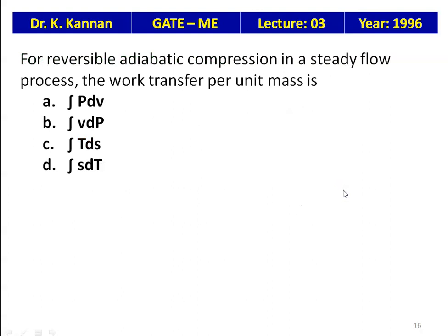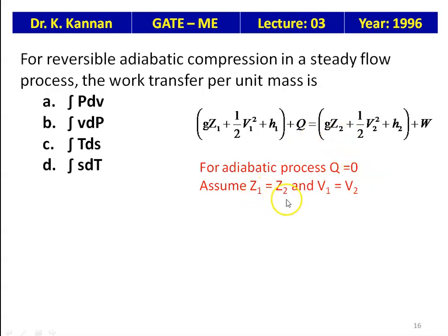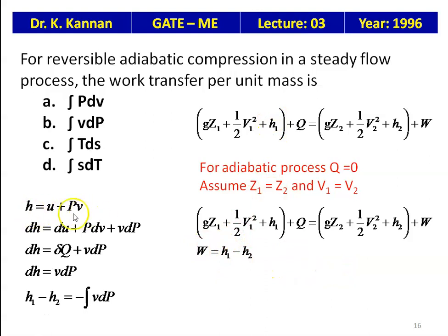For reversible adiabatic compression in a steady flow process, the work transfer per unit mass is given by: ∫P dV, ∫V dP, ∫T dS, or ∫S dT? Using the steady flow energy equation and setting Q=0, W = H1−H2. From dH = δQ + V dP, for adiabatic δQ = 0, so dH = V dP, giving W = −∫V dP. For steady flow the work is ∫V dP.